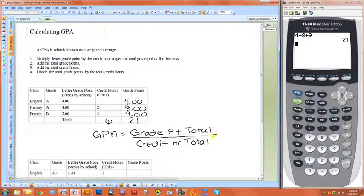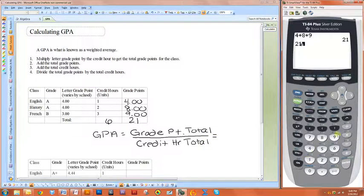So you do 21 divided by six, or three point five.